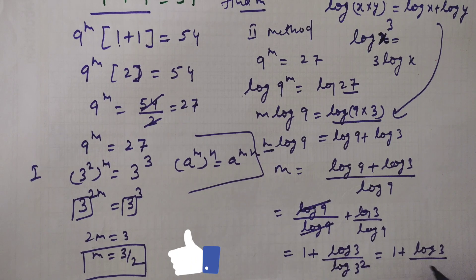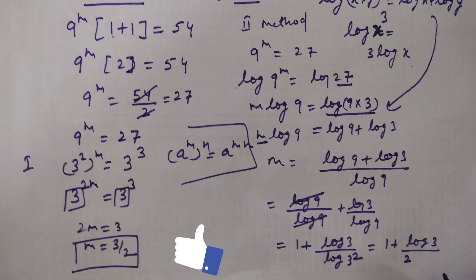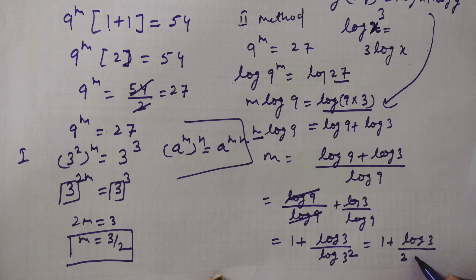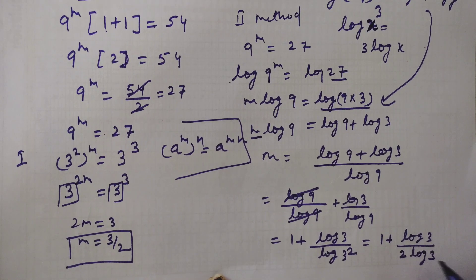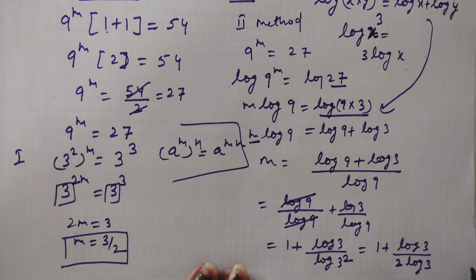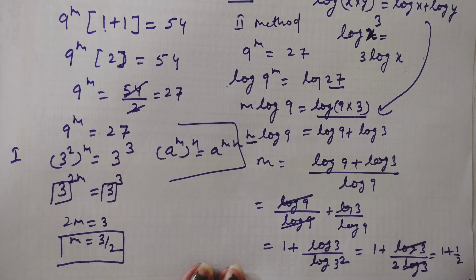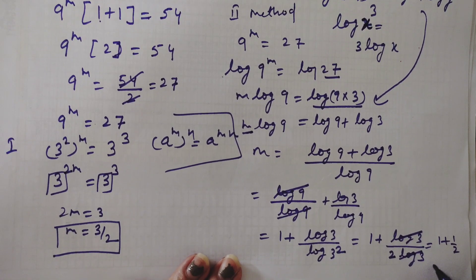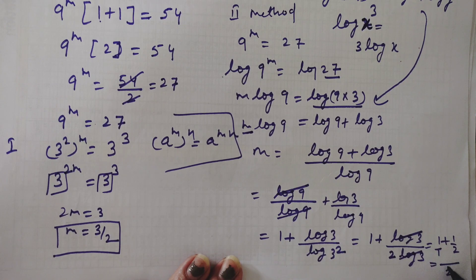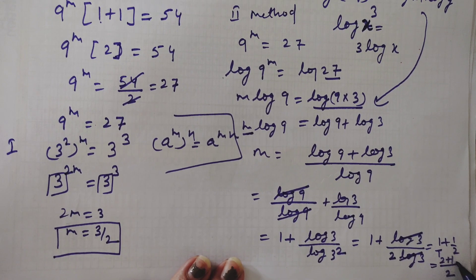The exponent comes in front of log 3. We can see that log 3 and log 3 cancel out, leaving 1 plus 1 by 2. Solving with LCM 2: (2 plus 1) over 2, which equals 3 by 2. So m equals 3 by 2 from method 2 as well.